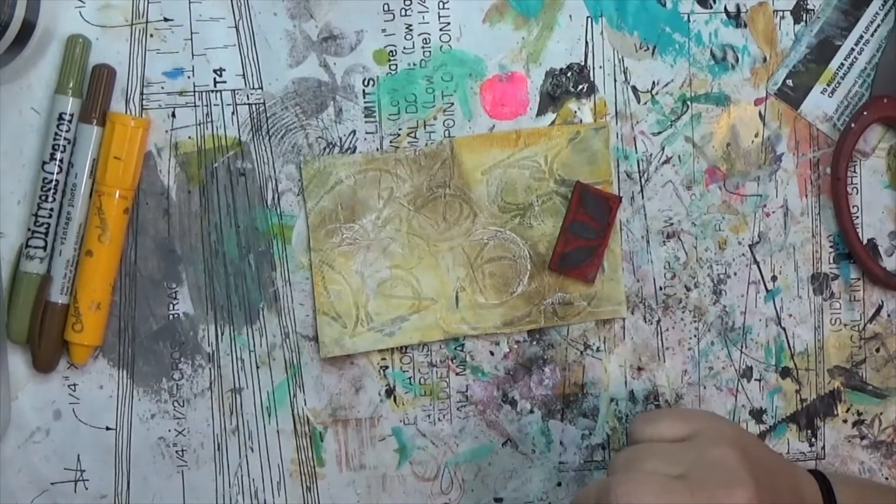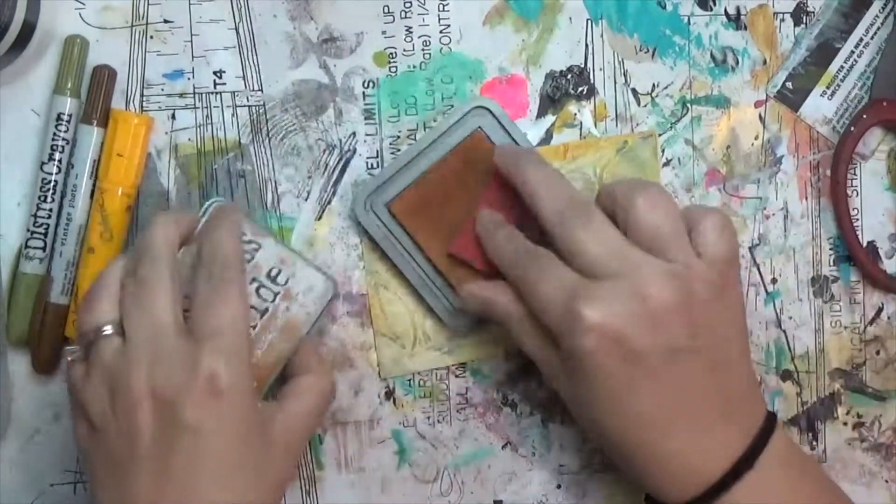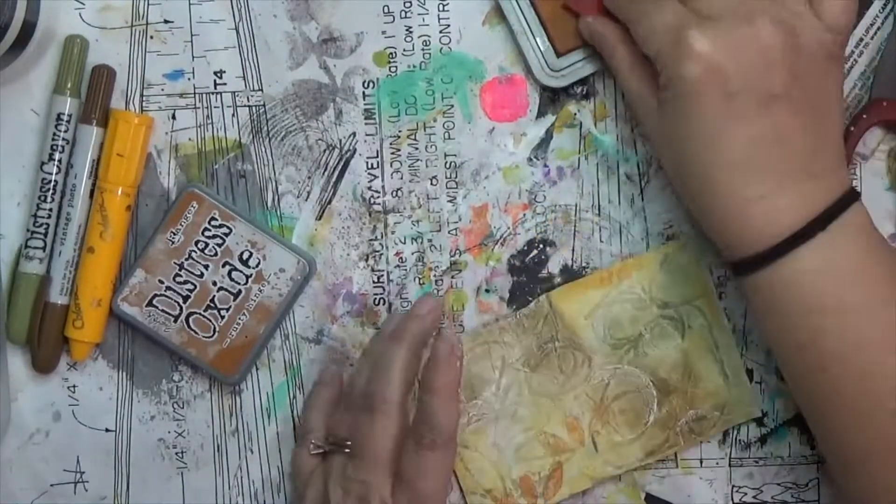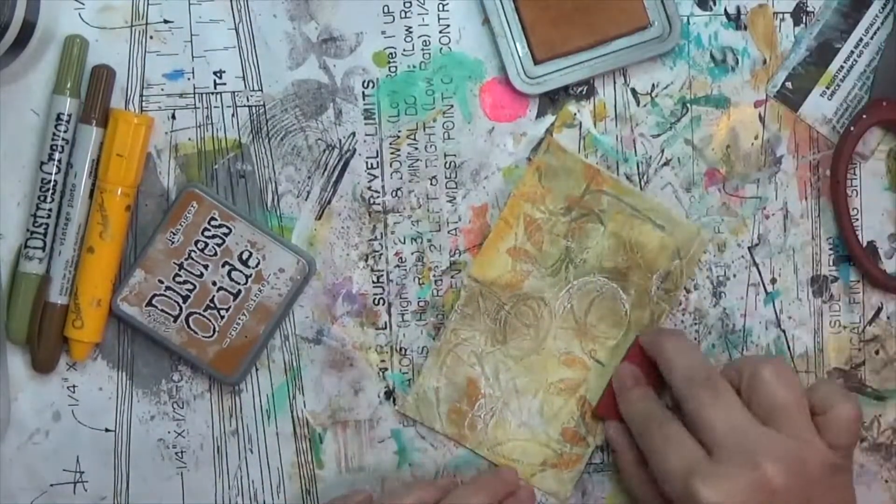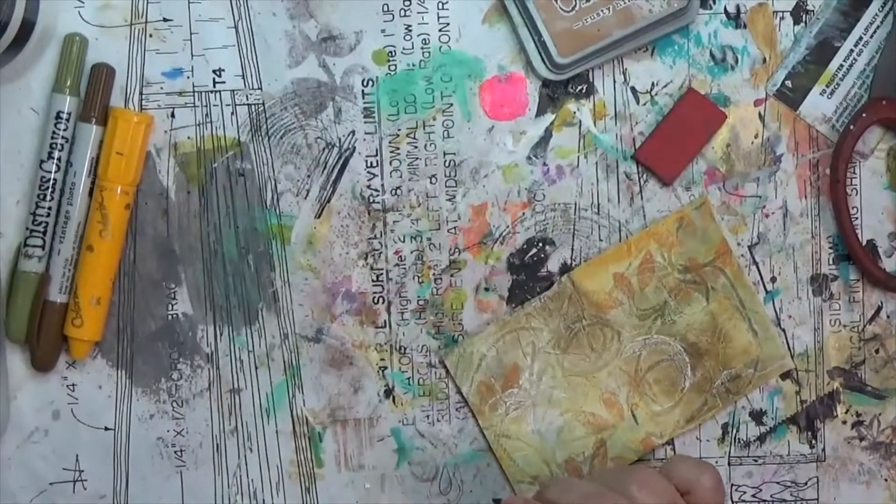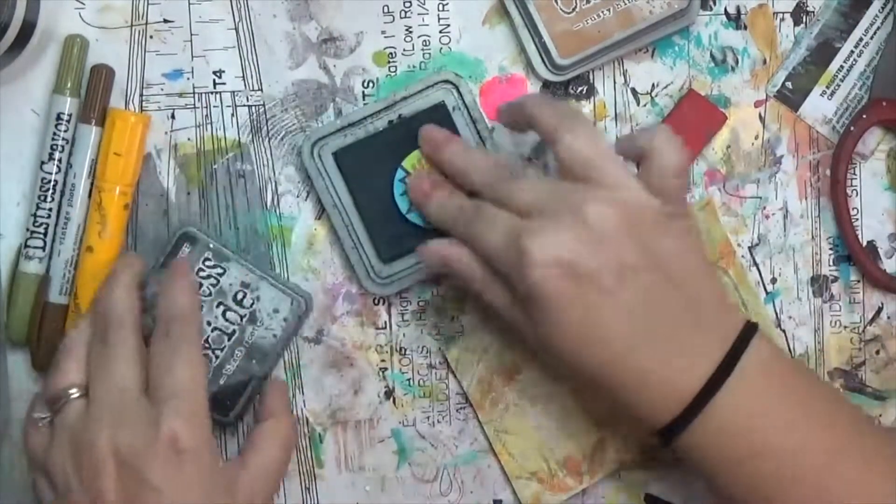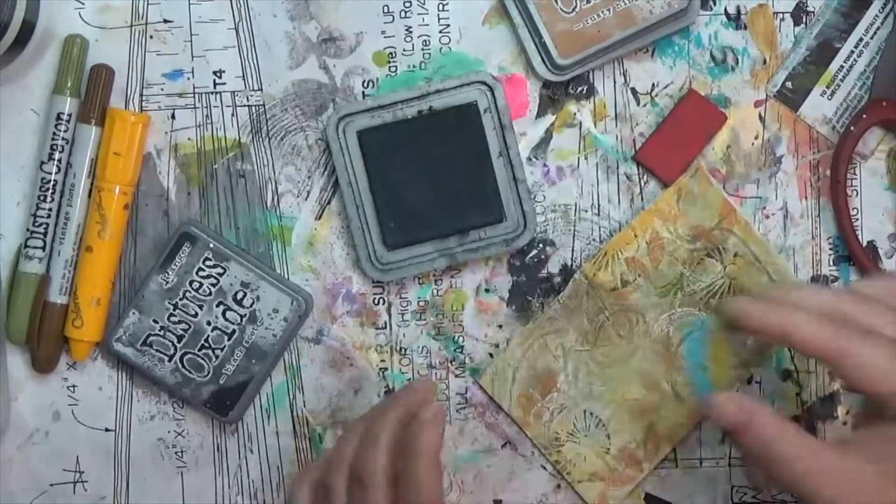So I grabbed one of my hand-carved eraser stamps and some distress oxide in Rusty Hinge and I'm going to put down a few little stamps on here, just for some texture. And I start to decide somewhere in here that I needed some black also. So I'll grab another one of those hand-carved stamps and use Black Soot to just add a few others.